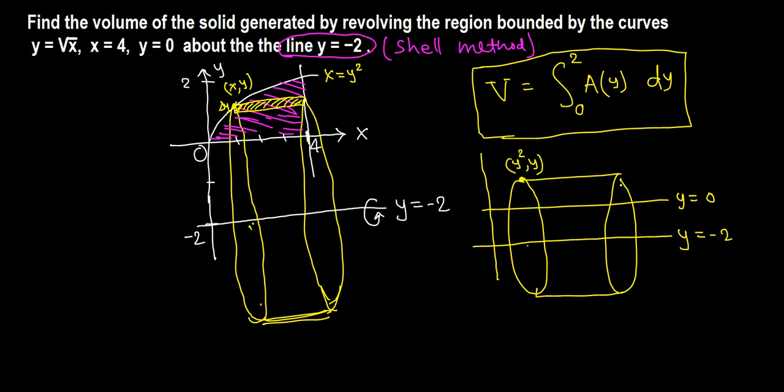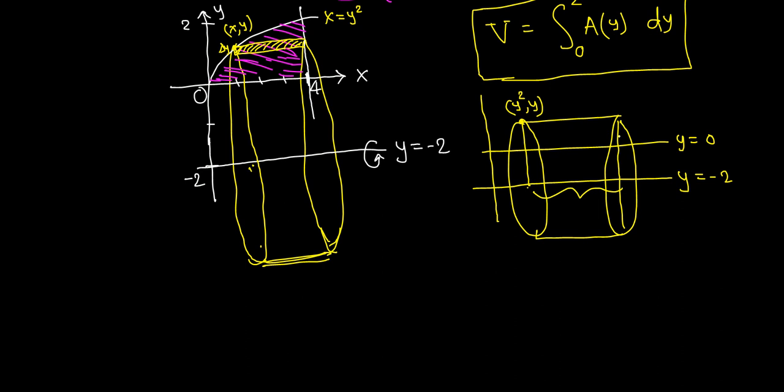And we want to find the area of this surface area of this cylinder. So we need the radius and we need this height. This length, this will be the height. This length is the height, and this length is the radius.